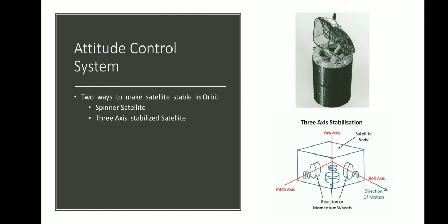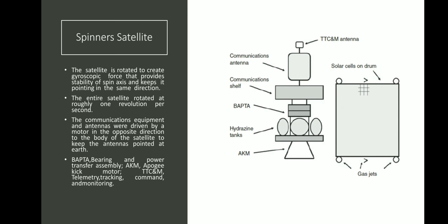There are two ways to make a satellite stable in its orbit. One is by the use of a spinner satellite and the second is by the use of a three-axis stabilized satellite. Diagrams of both are given on the right side of the slide — the upper one is the spinner satellite and the lower one is the three-axis stabilized satellite.